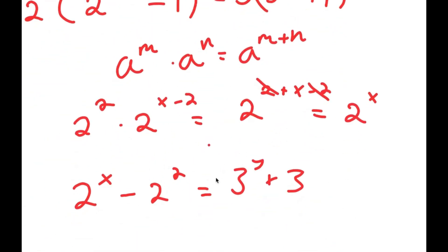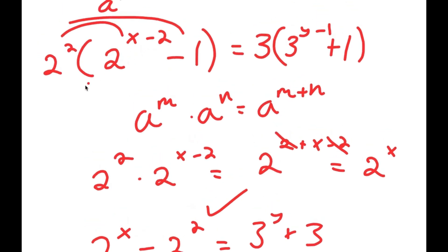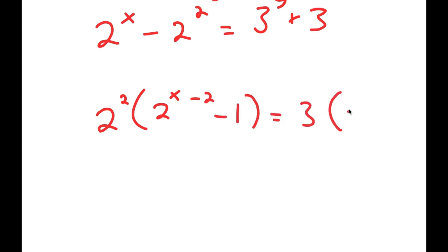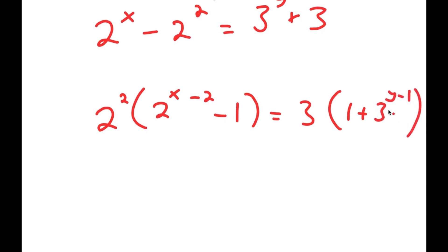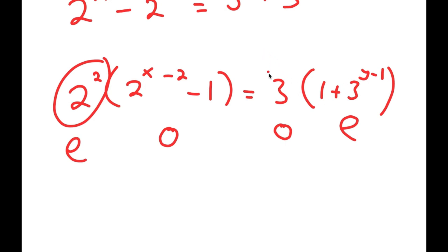Rewriting this: I have 2 squared times the quantity 2 to the power of x minus 2 minus 1 equals 3 times the quantity 1 plus 3 to the power of y minus 1. Notice 2 squared equals 4, which is even, and 2 to the power of x minus 2 minus 1 is odd — even times odd equals odd. On the right, 3 times any power is odd, and odd plus 1 is even — odd times even equals even. So I set the odd parts equal and the even parts equal.